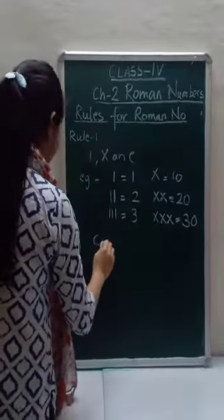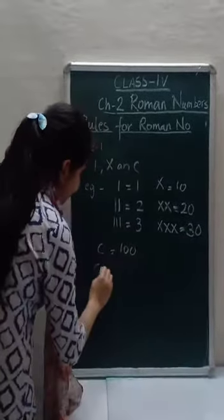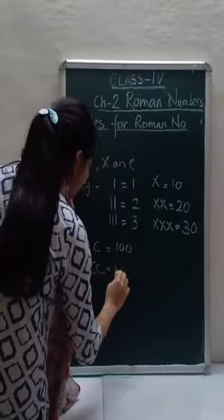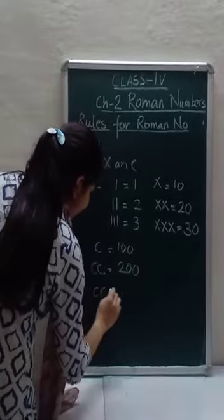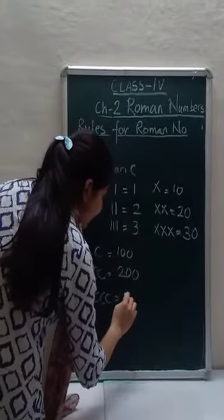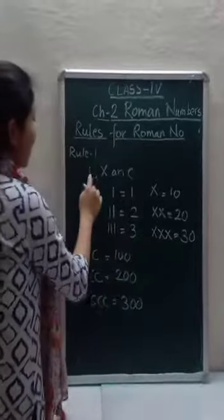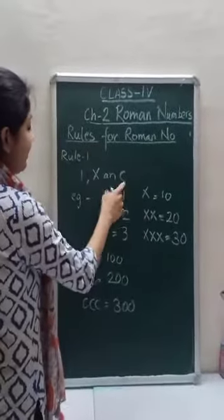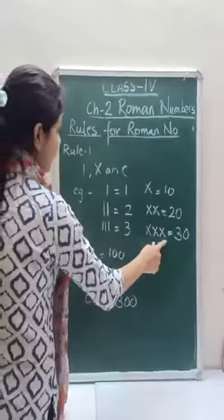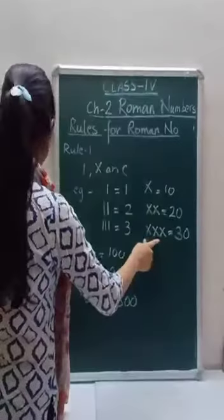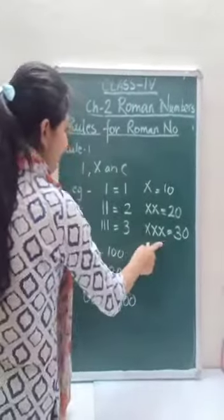And C denotes 100. If we write CC, that means 100 plus 100 equals 200. CCC means 100 plus 100 plus 100 equals 300. So I, X, and C we can use up to 3 times. These alphabets can be repeated up to 3 times.